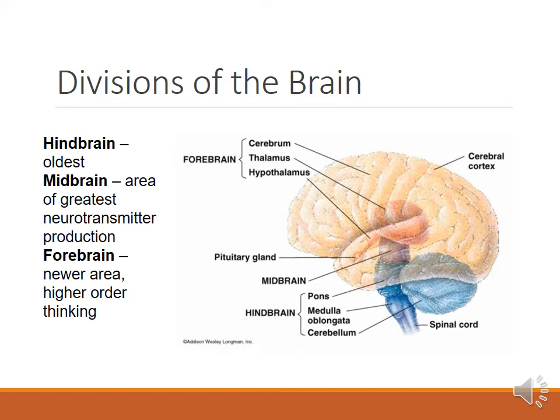We're going to start talking about divisions of the brain. There are three major regions: the hindbrain, the midbrain, and the forebrain. The hindbrain is the oldest; the midbrain is the area where we have the greatest amount of neurotransmitter production; and the forebrain is what we usually call the new brain.